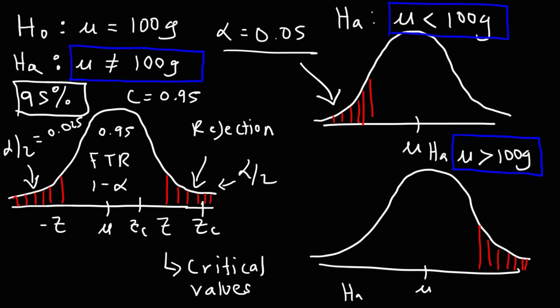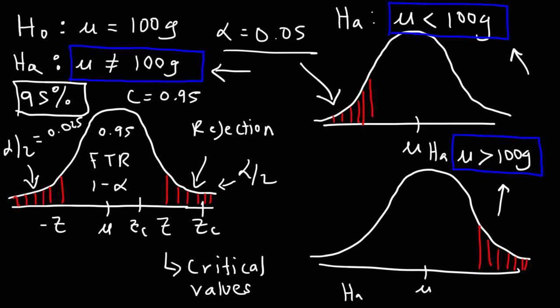So that's how you can tell whether you have a one-tailed or two-tailed test — look at the alternative hypothesis. If it says not equal to a number, use a two-tailed test. If the mean is less than a number, your calculated z-value will be on the left side, so use a left-tailed test. If the mean is greater than a number, use a right-tailed test. Thanks for watching and don't forget to subscribe.